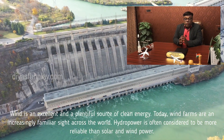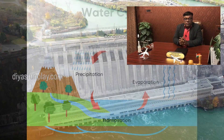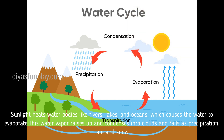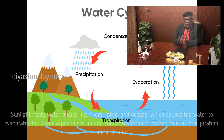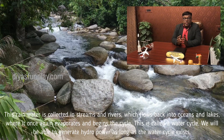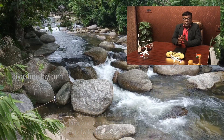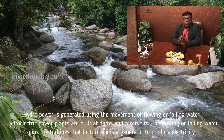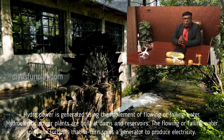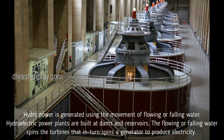Hydropower is often considered to be more reliable than solar and wind power. Sunlight heats water bodies like rivers, lakes, and oceans, causing the water to evaporate. This water vapor rises up, condenses into clouds, and falls as precipitation — rain and snow. This rainwater is collected in streams and rivers, which flow back into oceans and lakes where it evaporates again, beginning the cycle anew. This is called the water cycle. We will be able to generate hydropower as long as the water cycle exists. Hydroelectric power plants are built at dams and reservoirs, where the flowing or falling water spins turbines that in turn spin a generator to produce electricity.